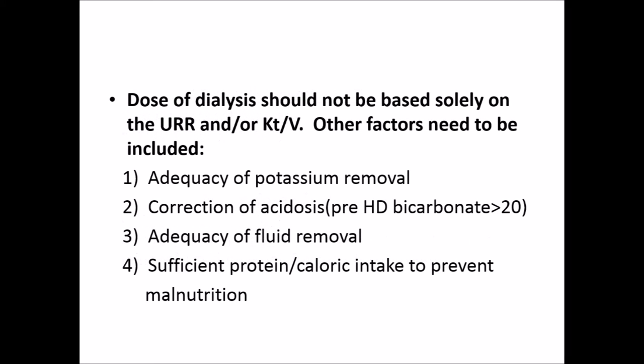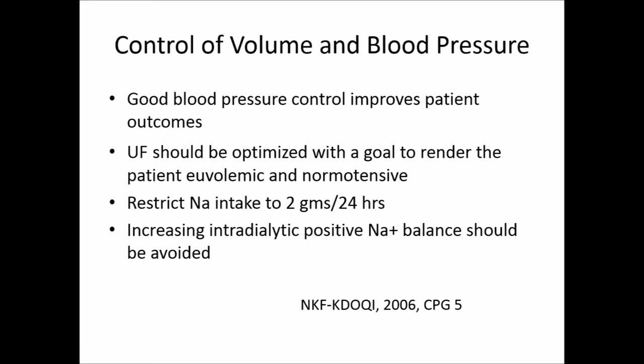The dose of dialysis should not be based solely on these numbers — other factors need to be considered: is potassium being adequately removed, is the patient having hyperkalemia despite dialysis, is acidosis being corrected adequately (pre-dialysis bicarbonate should be more than 20), is fluid removal adequate, and is the patient malnourished? Good blood pressure control is extremely important as it improves patient outcomes. Use should be optimal so the patient remains euvolemic and normotensive. Restricting sodium intake is important, and increasing interdialytic positive sodium balance should be avoided, as there is a tendency to increase dialysis sodium in hypotensive patients leading to a high positive sodium balance.